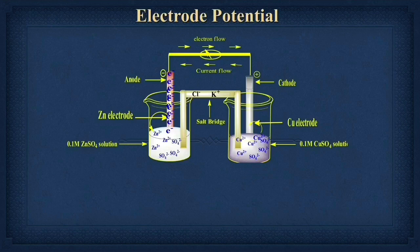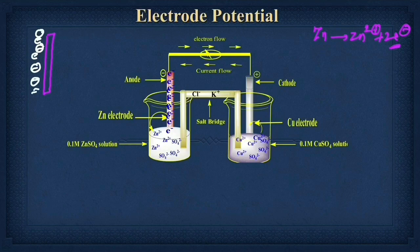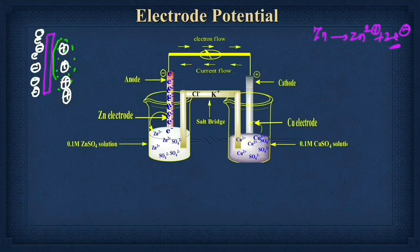Here we can write it like this. When the zinc gets oxidized from the zinc rod to the solution, this is the zinc electrode. When the zinc gets oxidized by the reaction Zn → Zn²⁺, there is a loss of electrons. This loss of electrons gets accumulated on the zinc electrode — there is an excess of electrons on the zinc. And in the solution, Zn²⁺ positive ions come in, so there is an accumulation of positive ions in the solution.